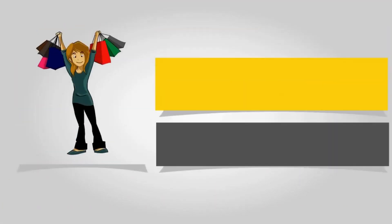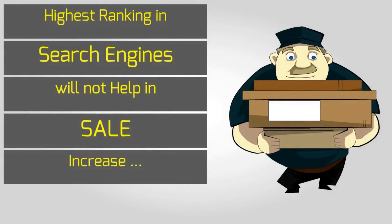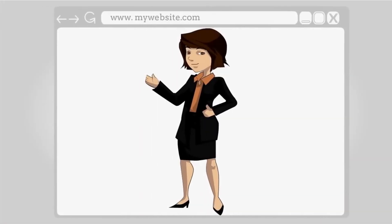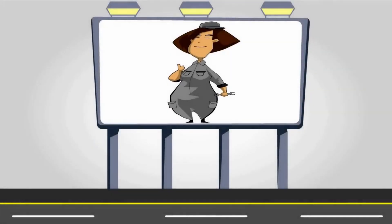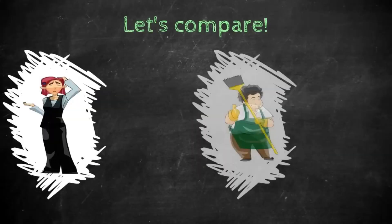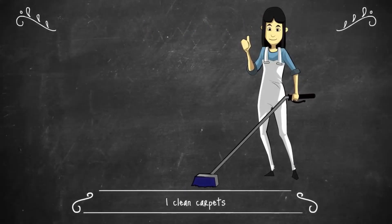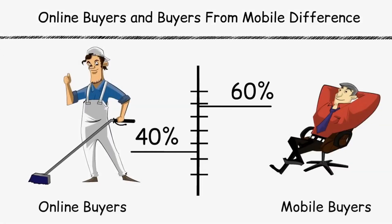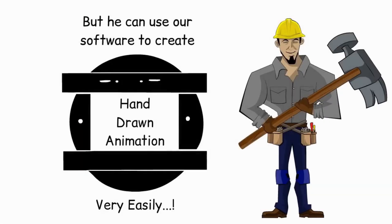Explaindio provides features like pre-made video templates, character sets, and backgrounds that users can customize to produce professional animated marketing and training videos. Explaindio allows businesses to create high-quality videos quickly and easily, without the need for specialized technical skills or expensive equipment.